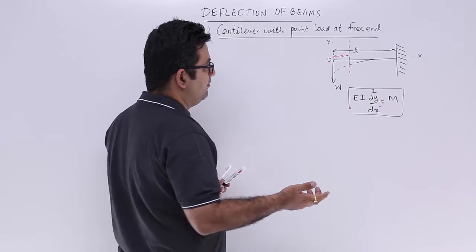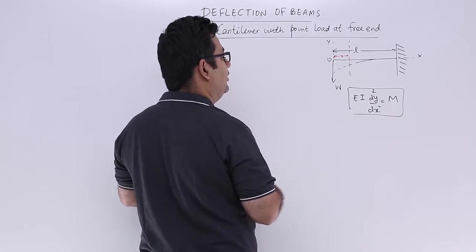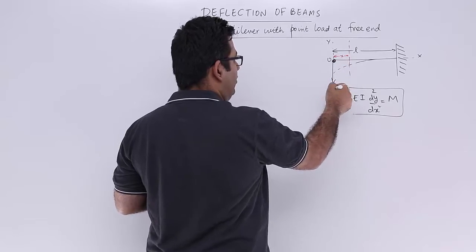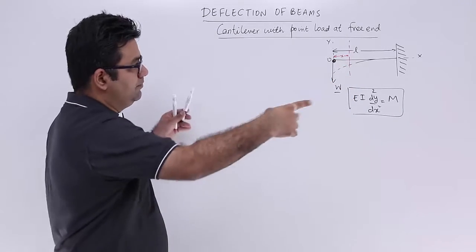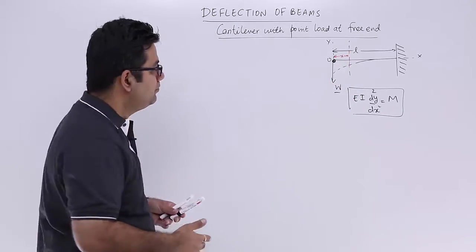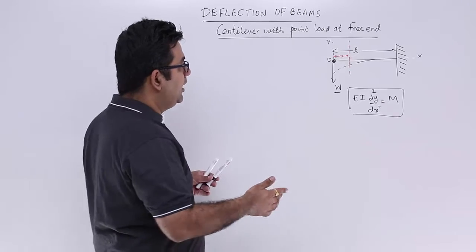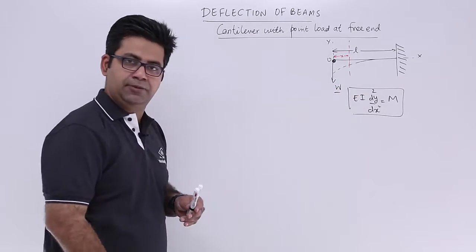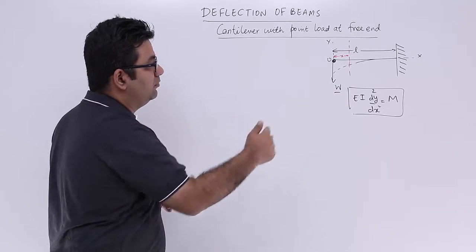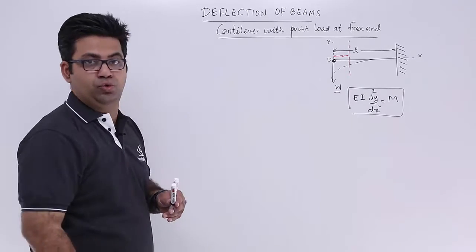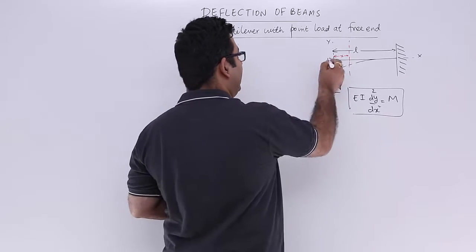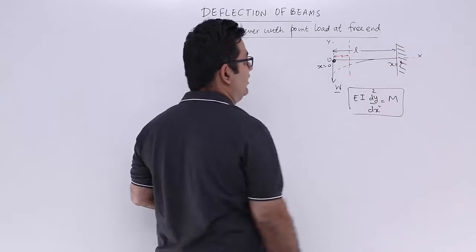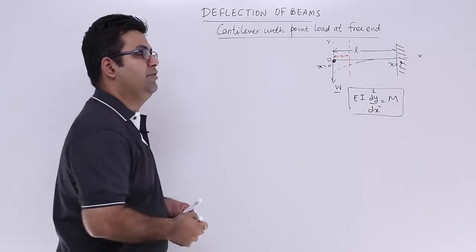We have a cantilever with a free end at O and a point load W at its free end, and the total length of the cantilever is L. I am taking a section X at any distance x from the free end O. So x starts from 0 at the free end, and at the fixed end the value of x is equal to L.